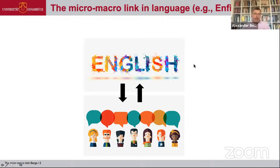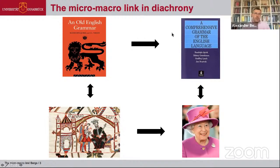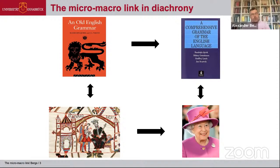Enfield has already worked on that quite a bit, and it gets even more complicated when we look at language diachrony. On the one hand we have speakers of Old English like King Edward, and Old English as a language. Then we have Queen Elizabeth and modern English as a language. Old English as a language evolves into modern English, and whatever King Edward was saying somehow transformed into what Queen Elizabeth is saying. It's the same problem, but slightly more complex since we're now moving through time. I would like to suggest that Coleman's bathtub might be an answer to that problem.